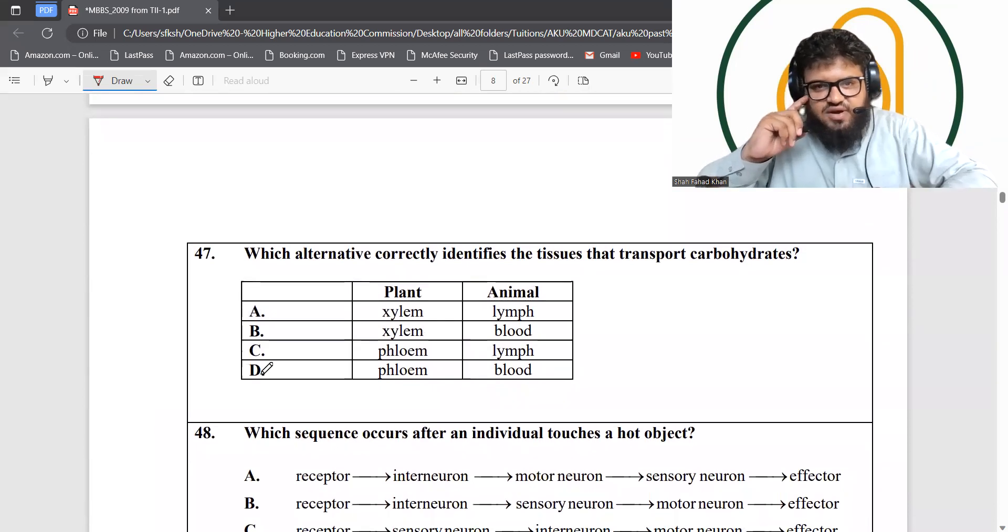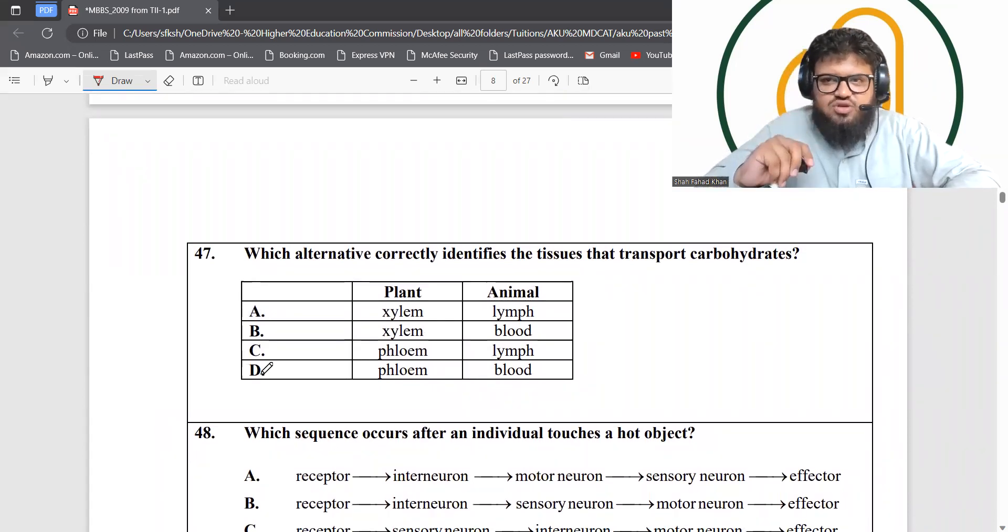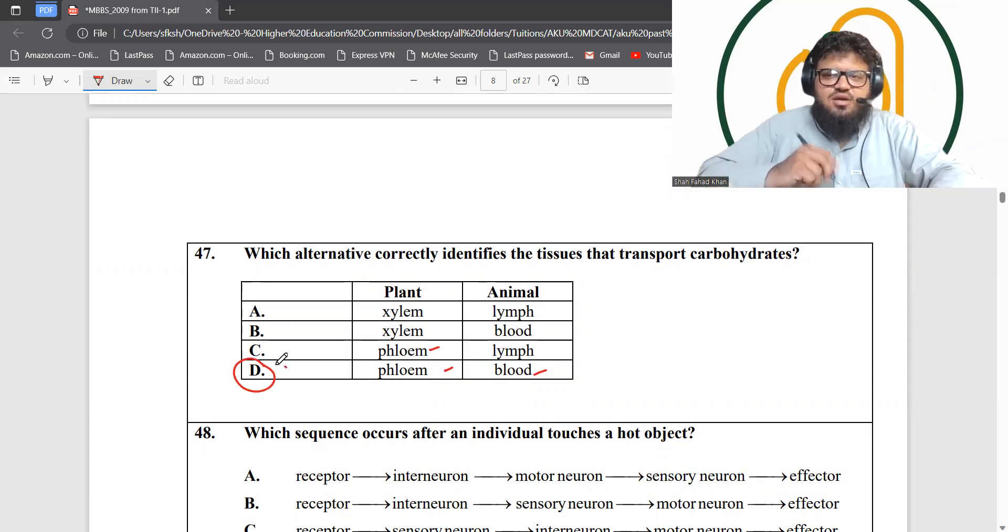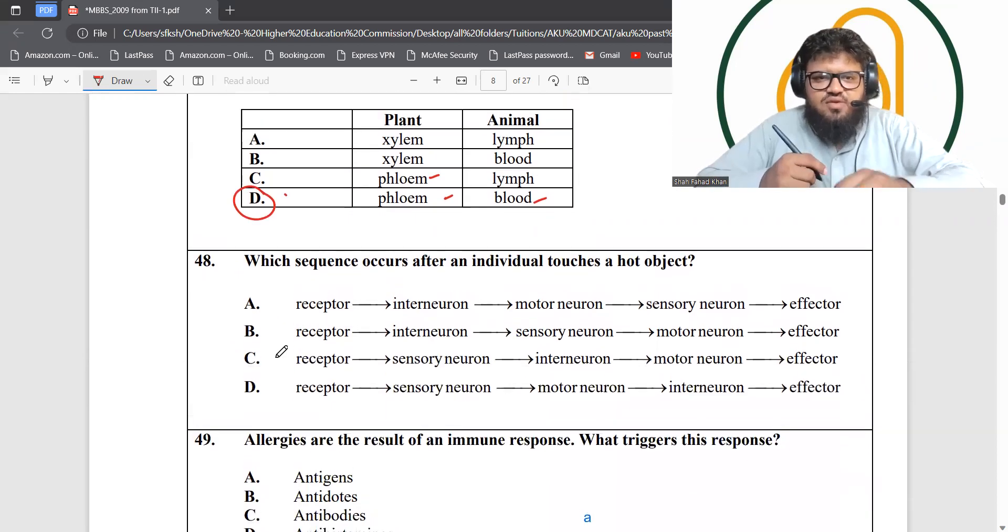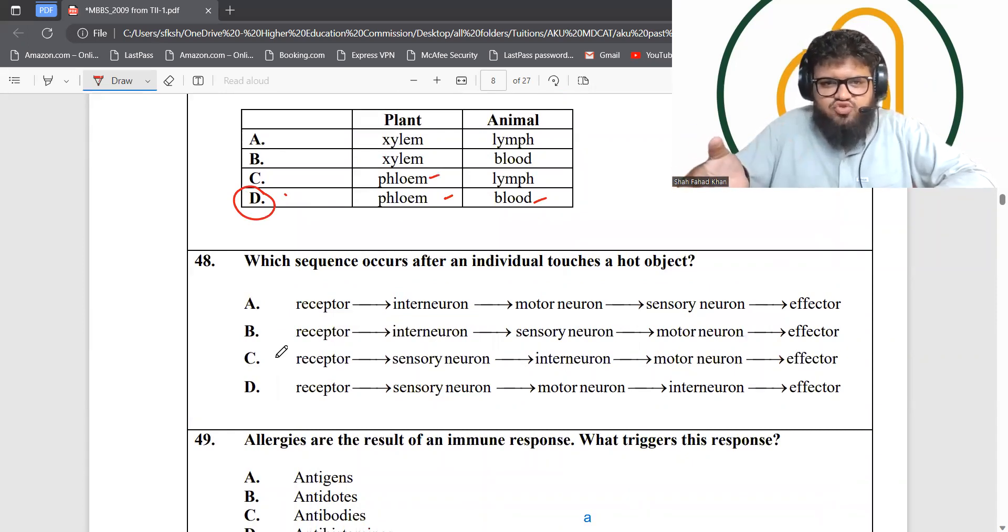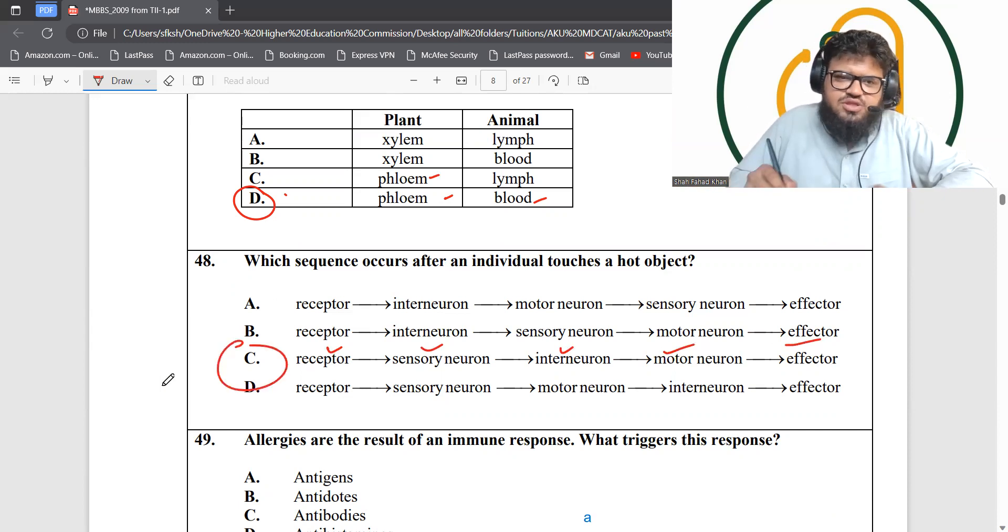Question 47: Which tissues transport carbohydrates? In plants, it's the phloem that transports growth solution, and in animals, it's the blood that carries glucose. Question 48: Which sequence occurs after an individual touches a hot object? This is a reflex arc action. First, it's the receptor, then sensory neuron, then interneuron, then motor neuron, then effector. Receptor, sensory, inter, motor, effector. Option C.